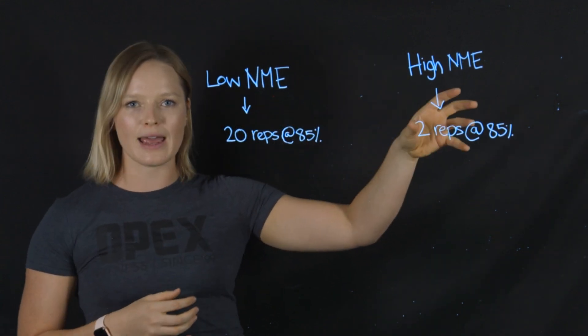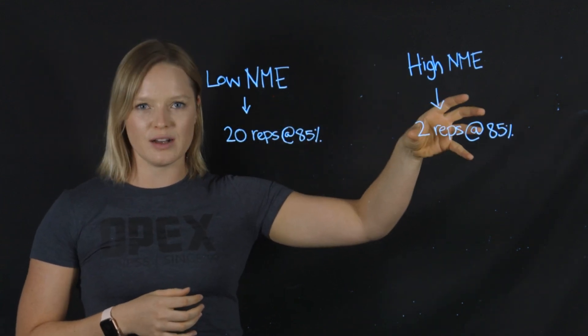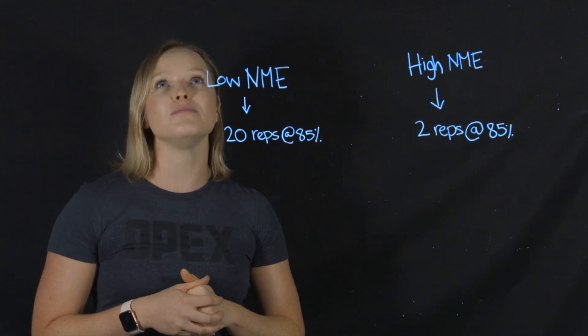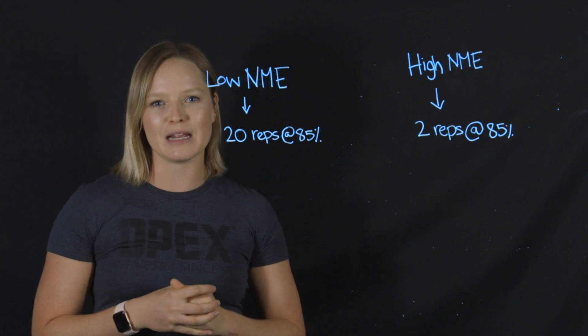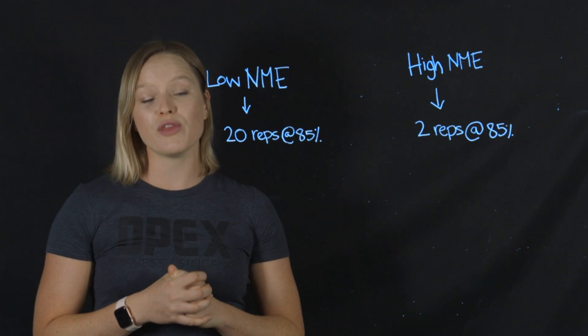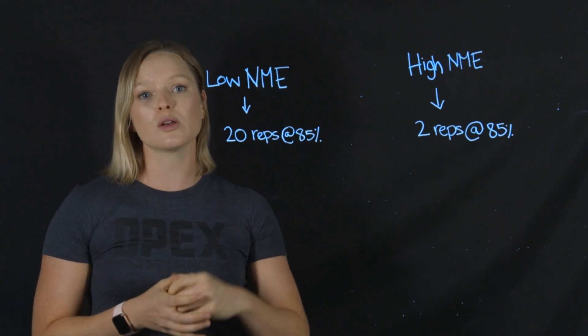This person over here can do two reps at 85%, so if I give them five by five at 80%, I am going to blow this person up and they probably just won't be able to perform it.